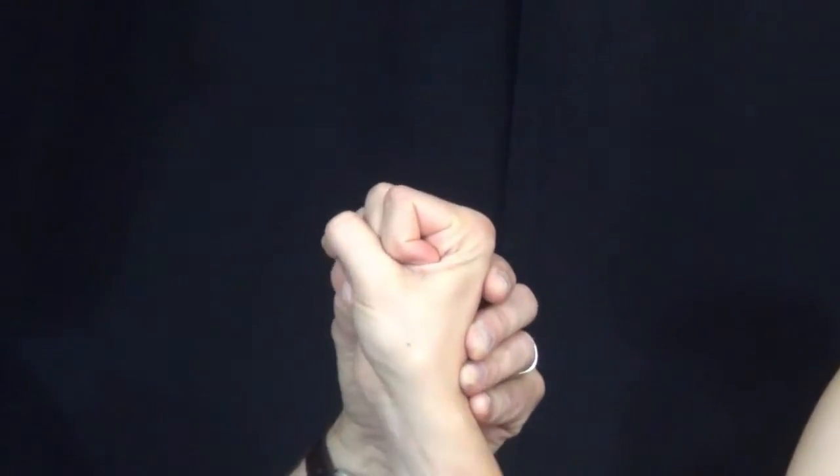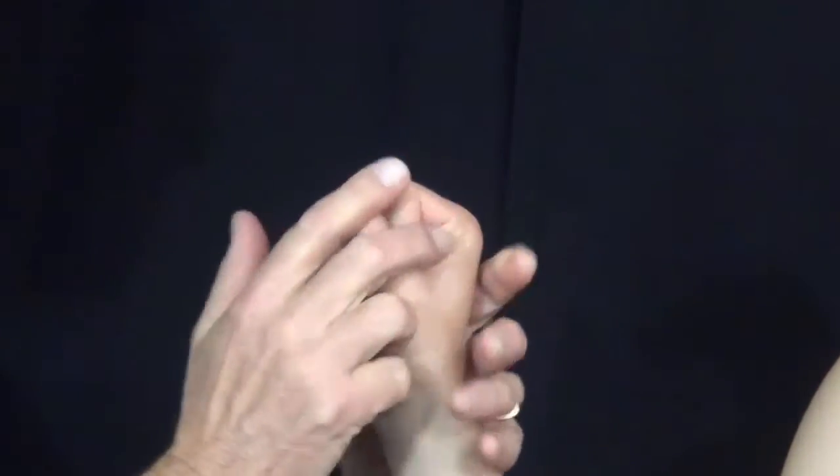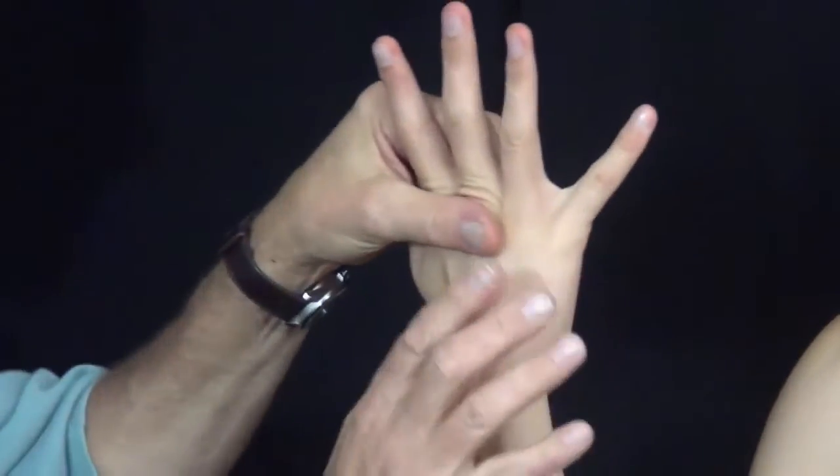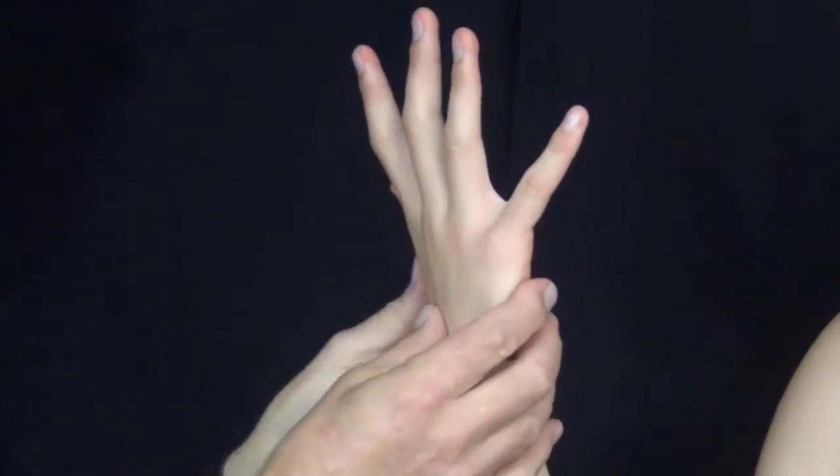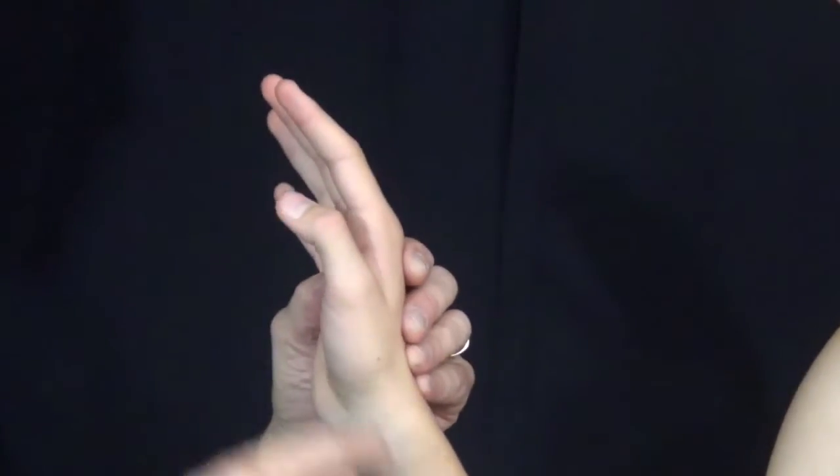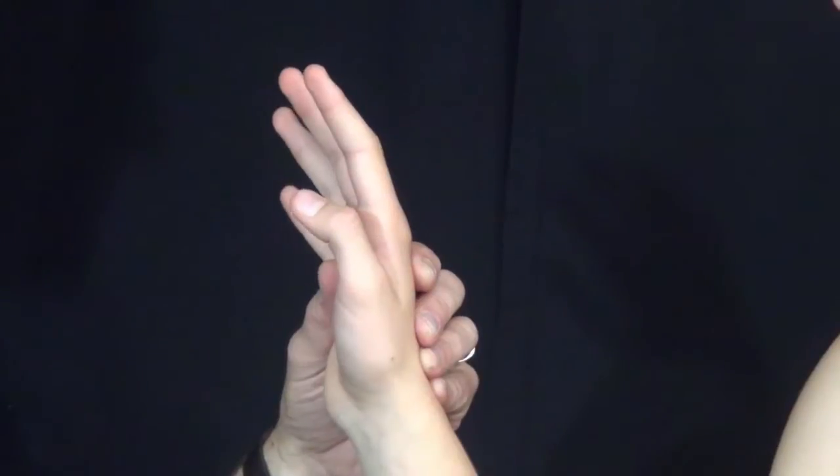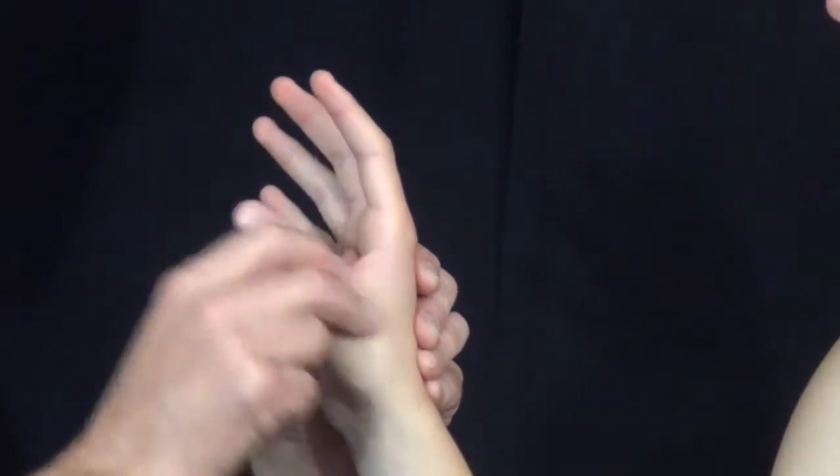When we're looking for specific pathology, we can divide the compartments into six compartments on the dorsum of the hand, from here to here. The first compartment is easiest to see from this view, and the first two tendons in the first compartment go to the thumb, the first ray.